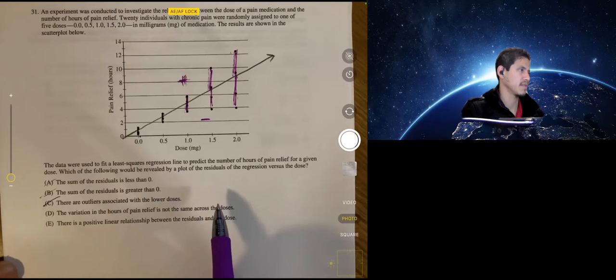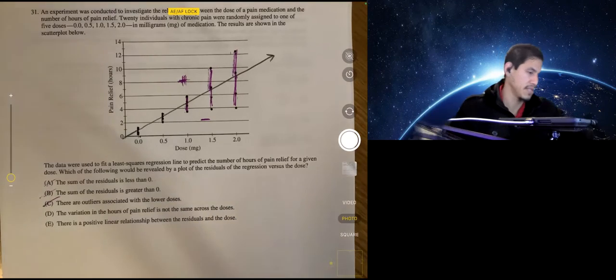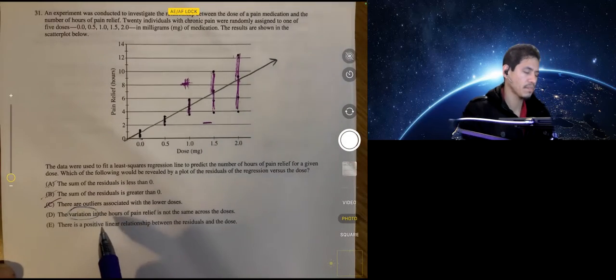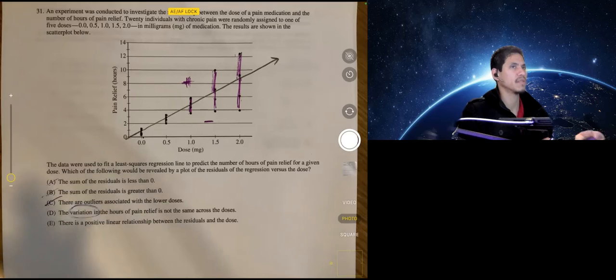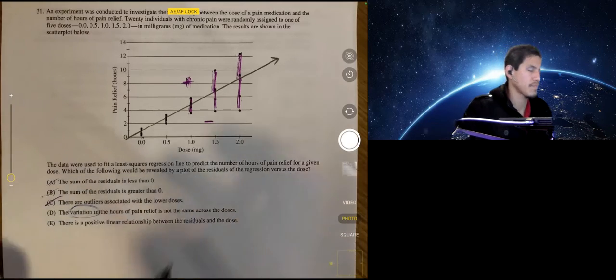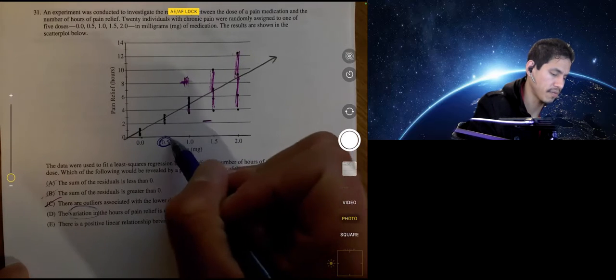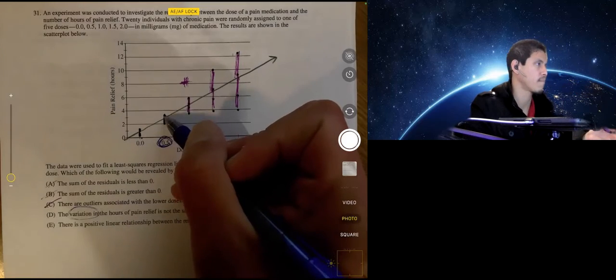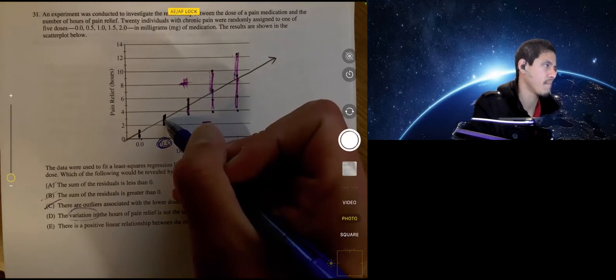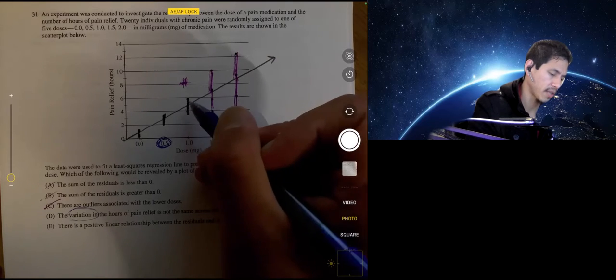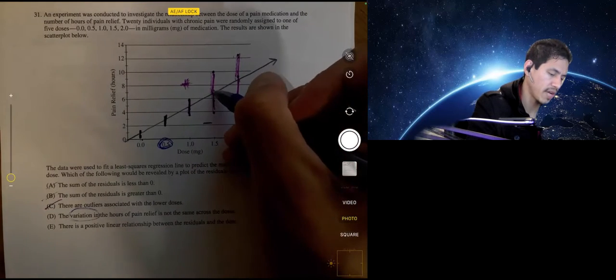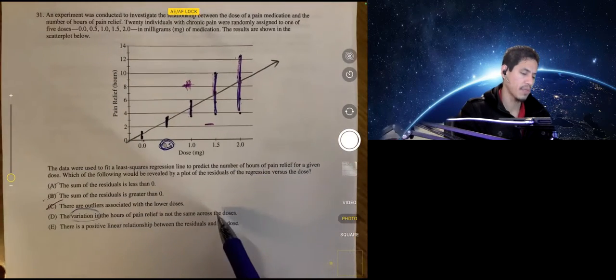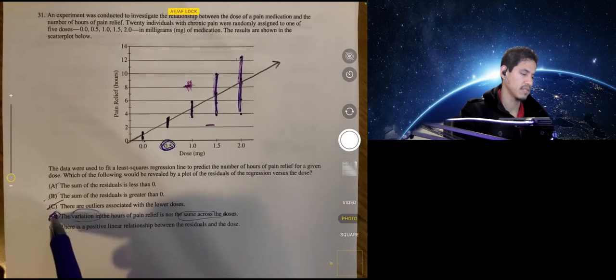The variation in the hours of pain relief is not the same across the doses. So, okay, this would be the solution. This would be the answer. So let's look at what this means. So remember, we say variation. It's kind of like thinking about how much the values differ from each other. So if we pick a specific dose, 0.5, the variation is the distance from here to here. That's the idea behind the range of values. But if we go to one, the variation becomes bigger. At 1.5, the variation goes all the way from here to here, becomes even larger. And two, same, it becomes its largest. So it's definitely not the same across the doses. So our answer would be D.